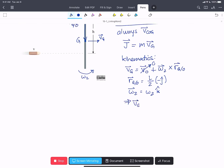So that means our V_G is going to be omega 2 K hat cross L over 2 in the minus J hat, and we'll get omega 2 L over 2 in the minus J hat.